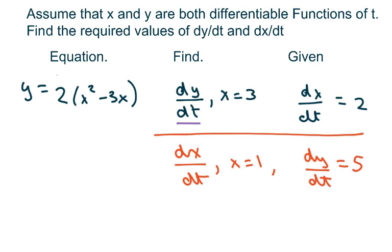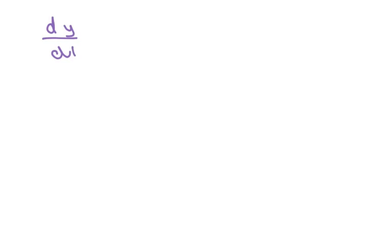The first thing I'm going to do is take the derivative of this, and before we get started I'm going to go ahead and distribute the 2. When we take the derivative of this, we're going to get the derivative of y with respect to t equals — our equation, when you take the derivative, gives you 4x minus 6, and then that's times the derivative of x with respect to t.